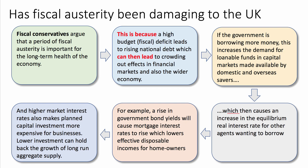I'm going to give you two contrasting chains of reasoning — one arguing that fiscal austerity has been good for the economy, and the other making a counter argument. We'll use connective words, which I'll highlight in a different color. First example: fiscal conservatives argue that a period of fiscal austerity is important for the long-term health of the economy. This is because — that's a connective phrase — a high fiscal deficit leads to a rise in national debt, which can then lead to crowding out effects in financial markets and the wider economy.